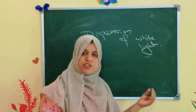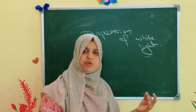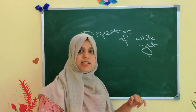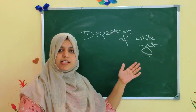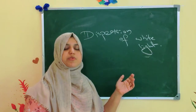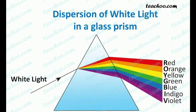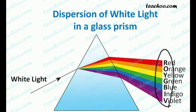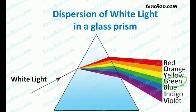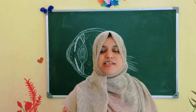The rainbow is a natural phenomenon showing the dispersion of white light. Dispersion of white light was given by Sir Isaac Newton. When white light passes through a prism, it splits into 7 colors — that is VIBGYOR: violet, indigo, blue, green, yellow, orange, and red.